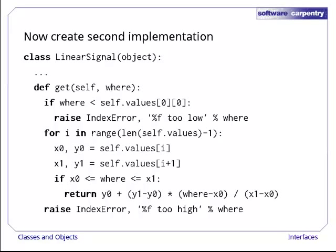All that's actually different is its get method, which finds the sample point immediately below the given x-coordinate, just like step signals, and then does the interpolation. In fact, the only thing that's different is this line.